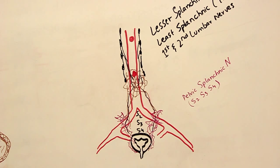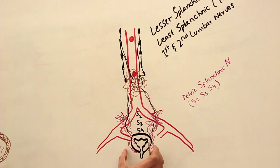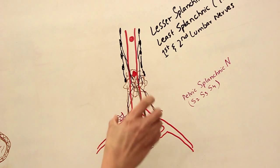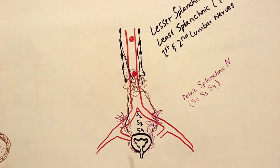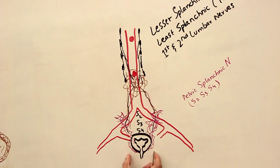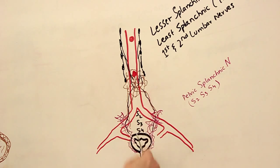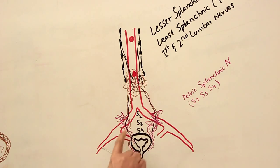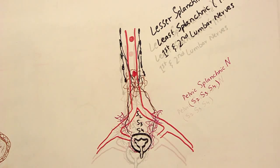So the nerve of retention is the sympathetic, while the nerve of emptying is the parasympathetic. These nerves reach the bladder through the vesicle plexus, which is formed by fibers descending from the inferior hypogastric plexuses.